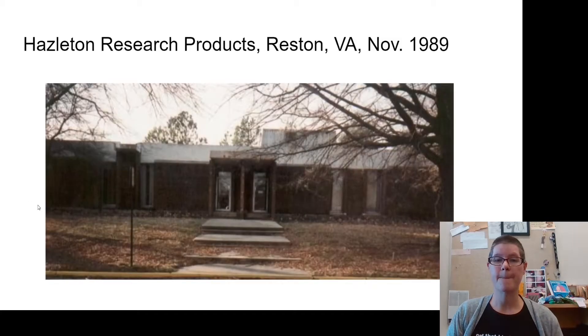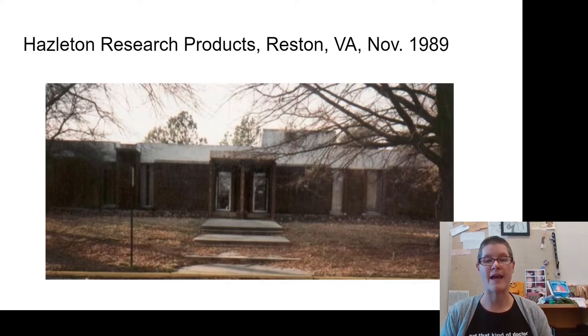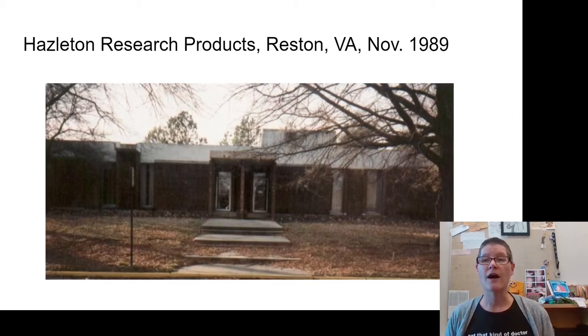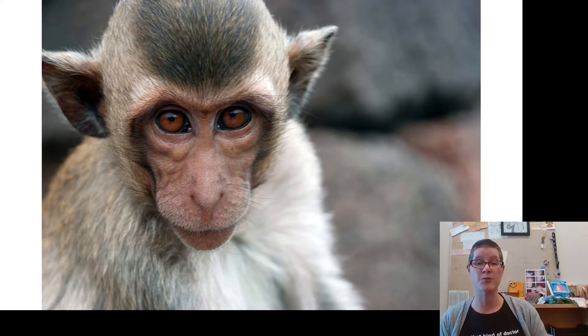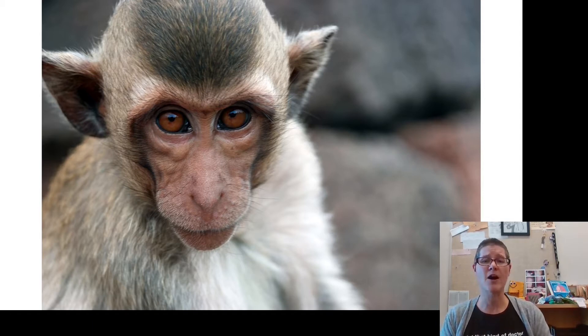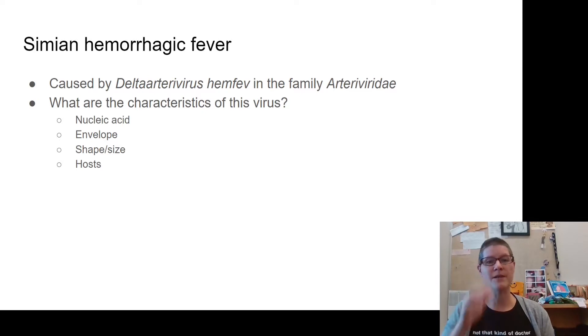Our story starts at Hazleton Research Projects in Reston, Virginia in November of 1989. This was a private research facility working with animals, specifically monkeys of various kinds — non-human primates. About 100 monkeys were brought over from the Philippines, and then some of them started getting sick. About five monkeys showed symptoms that had a high likelihood of being simian hemorrhagic fever.